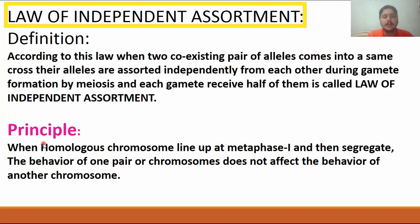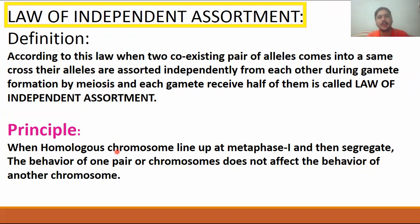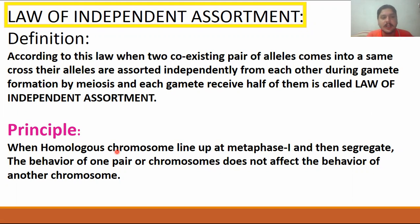What is the principle of this law? The principle is that when homologous chromosomes line up during metaphase one and then segregate, the behavior of one pair of chromosomes does not affect the behavior of another chromosome. The homologous chromosomes are separated from each other, and the other pair of chromosomes has no effect.